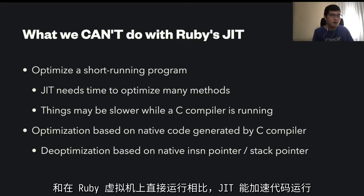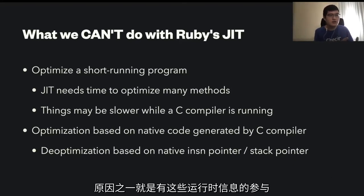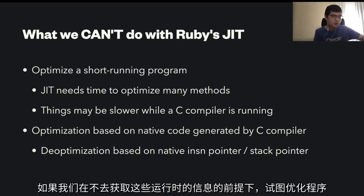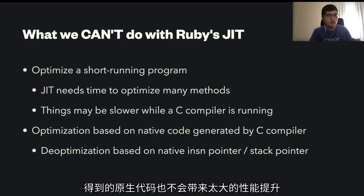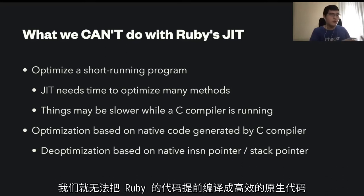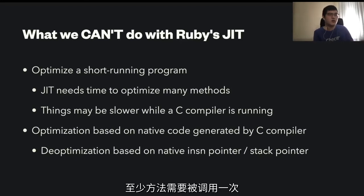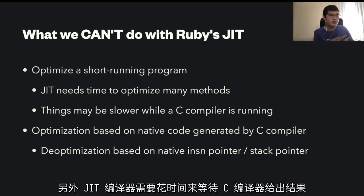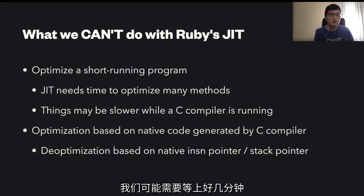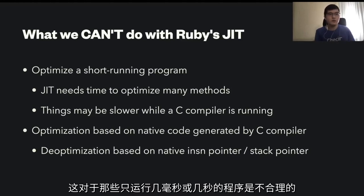Because Ruby VM is already optimized very well, without having runtime information we can't optimize better than the virtual machine. The reason why JIT compiler generated code is faster than Ruby VM is that we utilize runtime information. If we optimize Ruby VM to native code without knowing actual runtime information, we don't gain much performance. So we can't compile Ruby methods to native code ahead of time efficiently for that reason. That's why we need to rely on long-running programs, because we need to run at least once. Also, JIT compiler takes time waiting for the C compiler — if we want to compile hundreds of Ruby methods, we may need to wait some minutes, so it's not suitable for programs running for only milliseconds or seconds.